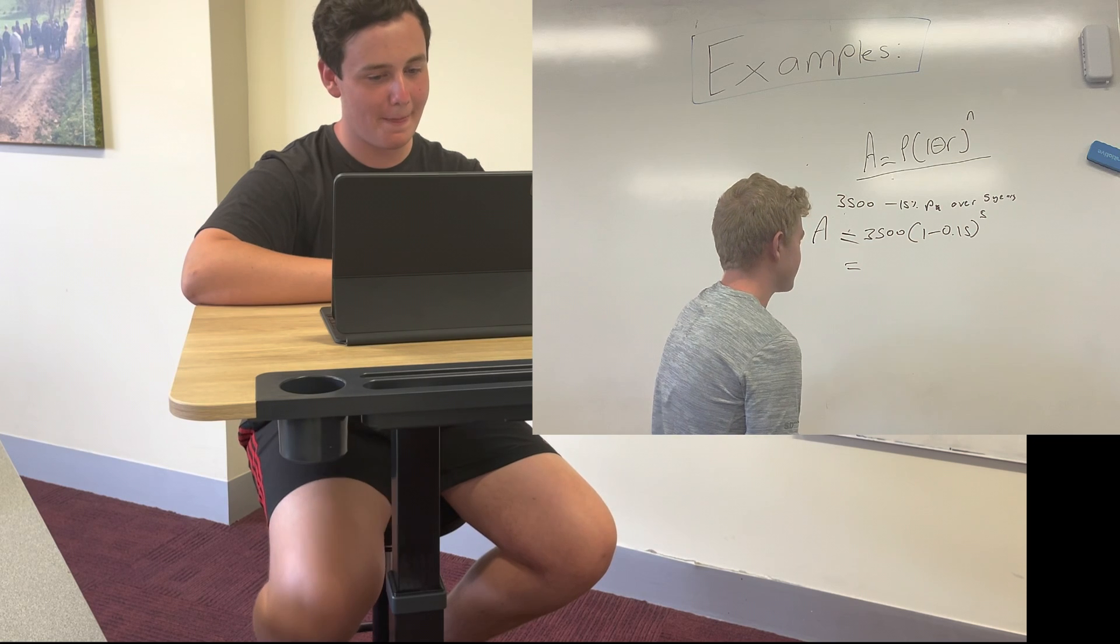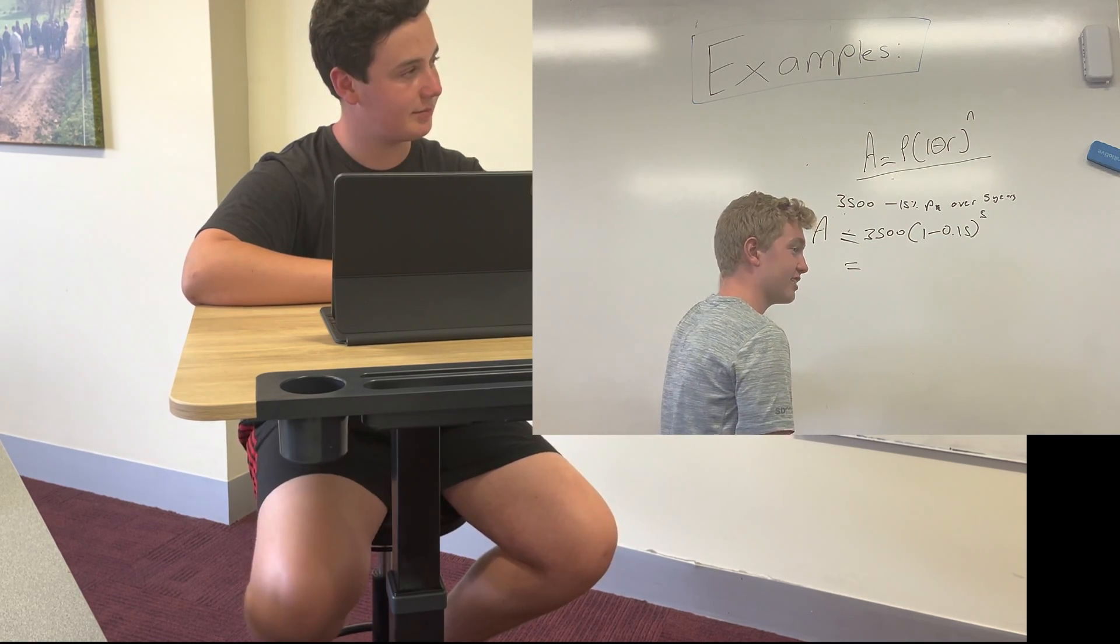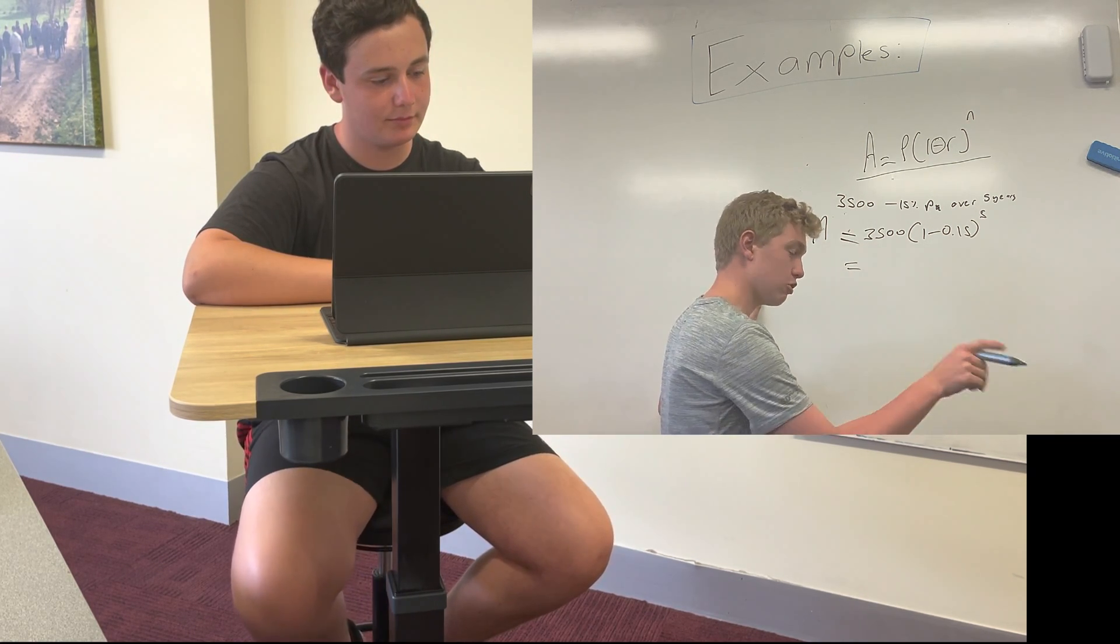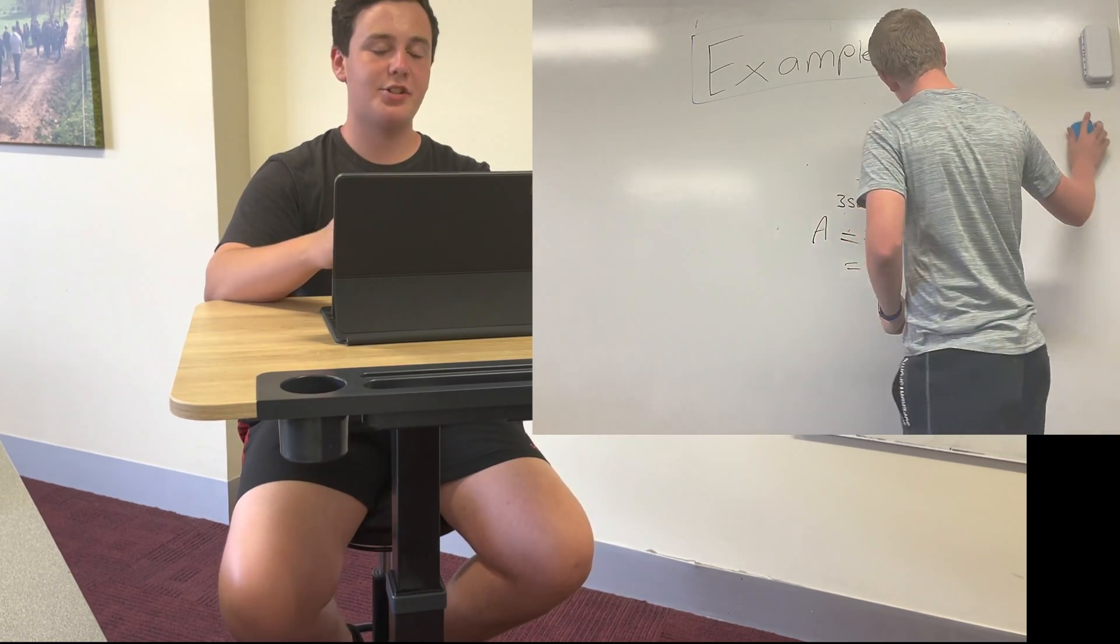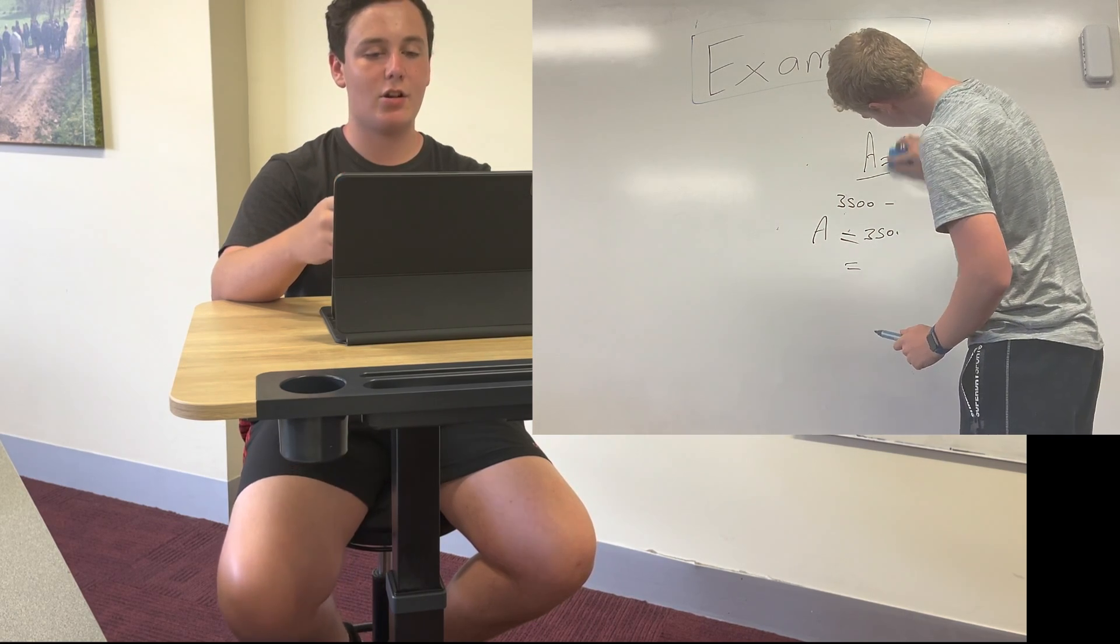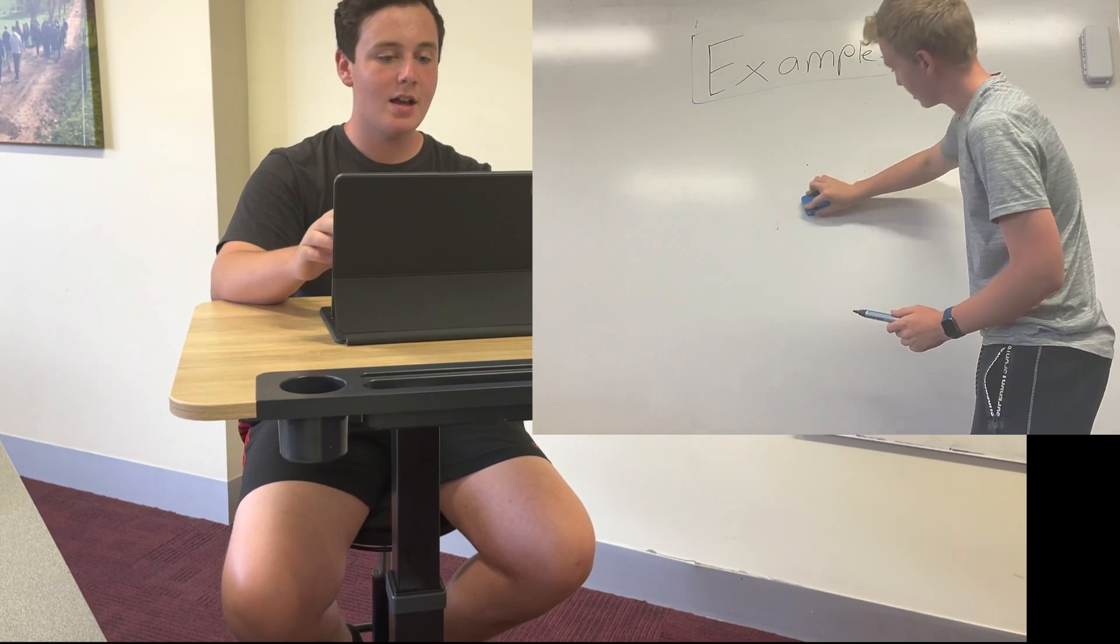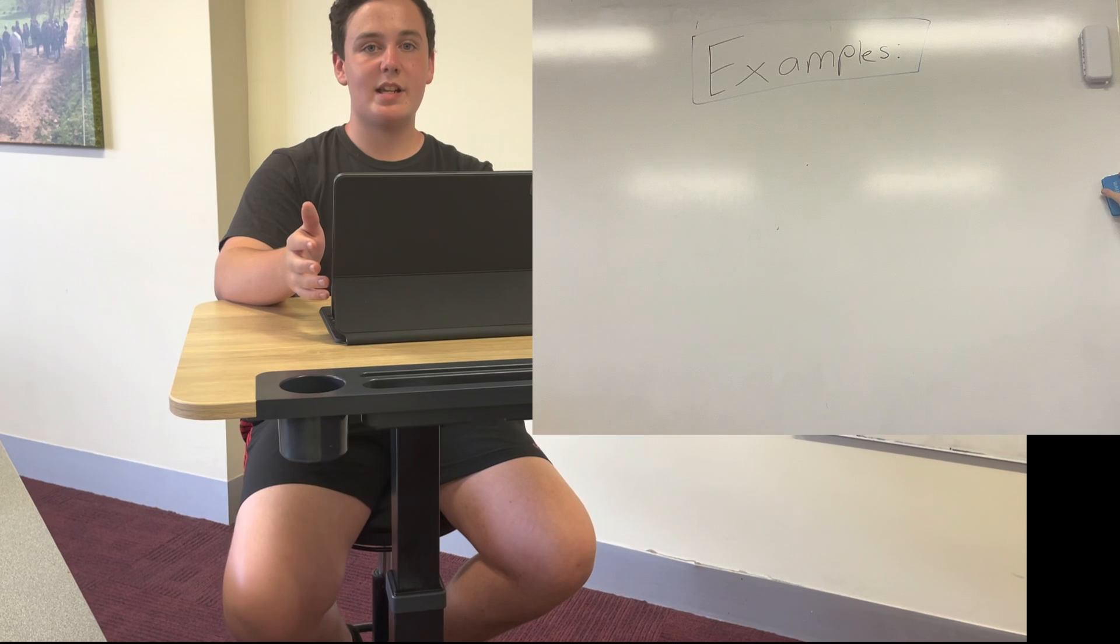Alright so yeah. So that's what you do there. Plug it down into your calculator. That will give you the value of the item after the set number of years. Yeah it's similar to compound interest. You just have to remember that depreciation is 1 minus R and compound interest is 1 plus R. Yeah good stuff. So that's all on interest and depreciation.